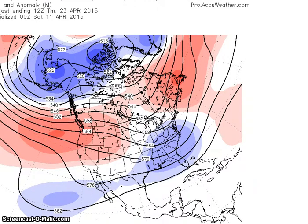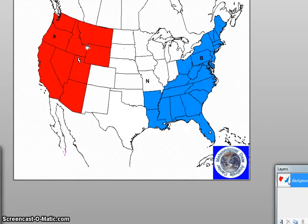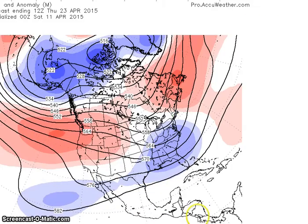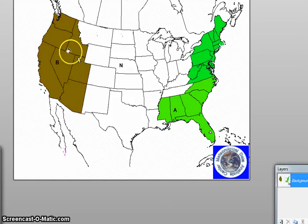During this forecast period, I am forecasting above normal temperatures in the west and below normal temperatures for the eastern region. Temperature anomalies in the east are forecast to be 10 to 15 degrees below normal, and in the west, 10 to 20 degrees above normal. For precipitation, I am forecasting below normal precipitation in the west and above normal precipitation in the east.